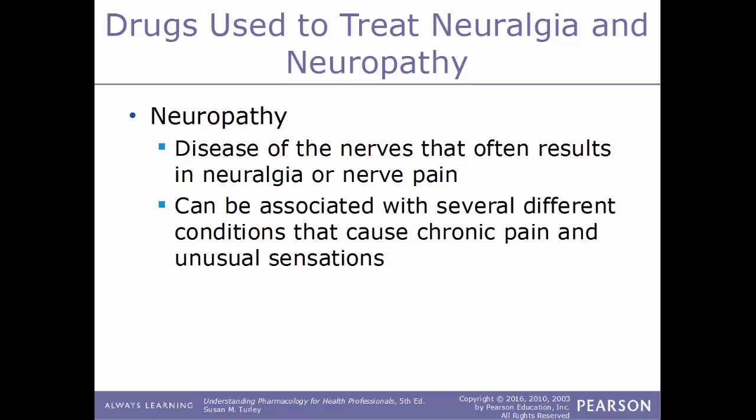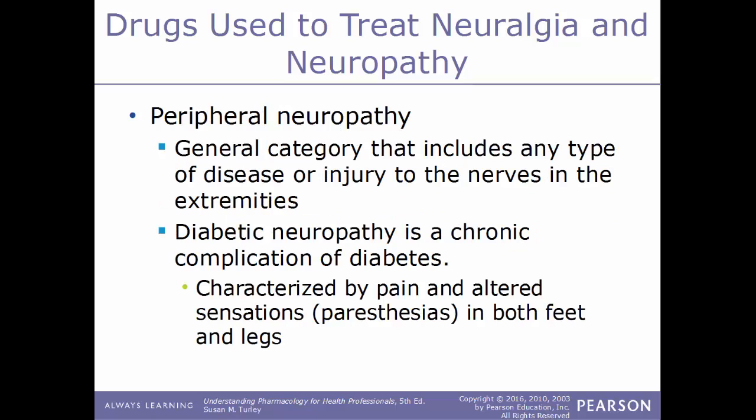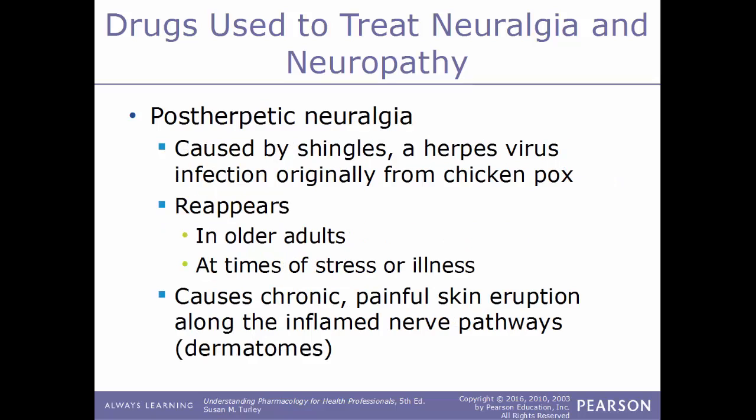Now we'll move on to drugs used to treat neuralgia and neuropathy. Neuropathy is a disease of the nerves that often results in neuralgia, or nerve pain, associated with chronic pain and unusual sensations. Examples include peripheral neuropathy — any injury or disease to nerves in the extremities — and diabetic neuropathy, a chronic complication of diabetes characterized by pain and altered sensations in both feet and legs. Postherpetic neuralgia is caused by shingles, an infection from the herpes virus originating from chickenpox, causing chronic painful skin eruptions along inflamed nerve pathways.